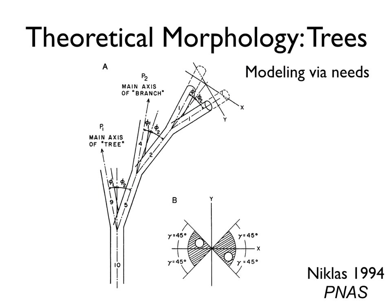This was work done by Karl Niklas in the 1990s, and he took a similar approach to Raup. He made a theoretical morphology of trees modeling via their three needs. He made a physical model that took into account things like branching, how far away branches were, the angle of branches, and how much rotation there was between branches in a three-dimensional space.